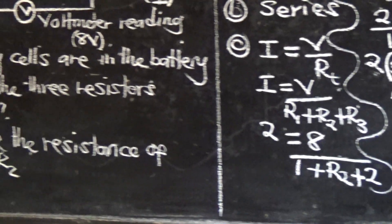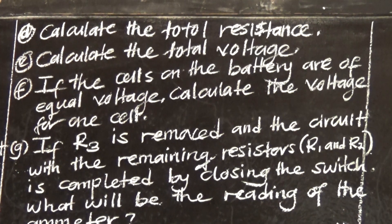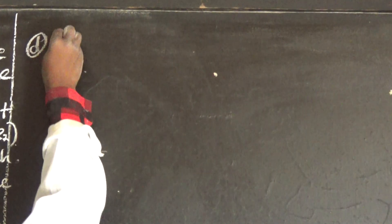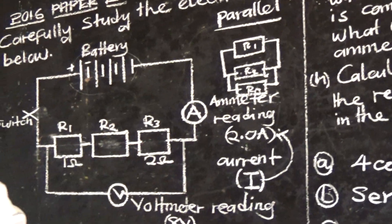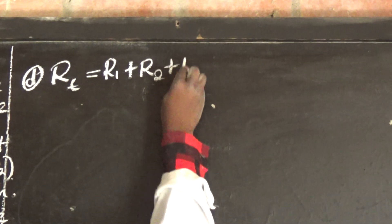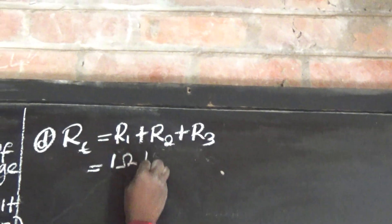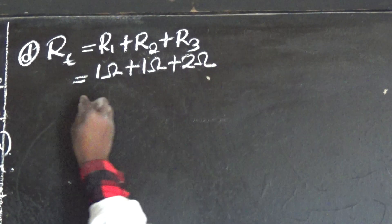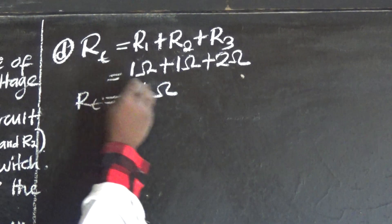Question (d): Calculate the total resistance. Since the three resistors are in series, we just add them: R_total = R1 + R2 + R3 = 1 + 1 + 2 = 4 ohms. Our total resistance is 4 ohms.